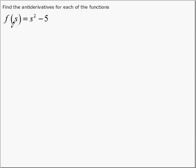The antiderivative of this function, s squared minus 5. Don't forget to use capital F for antiderivative. Well, s squared had to come from s cubed. The 3 comes down, but it's not here, so it has to be canceled by multiplying by 1 third.